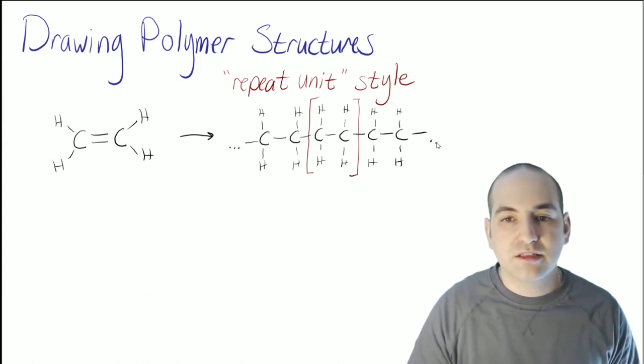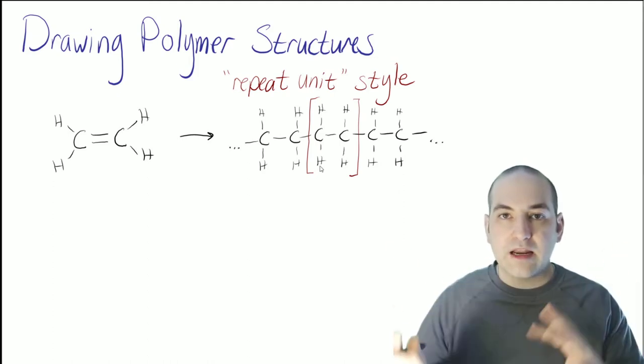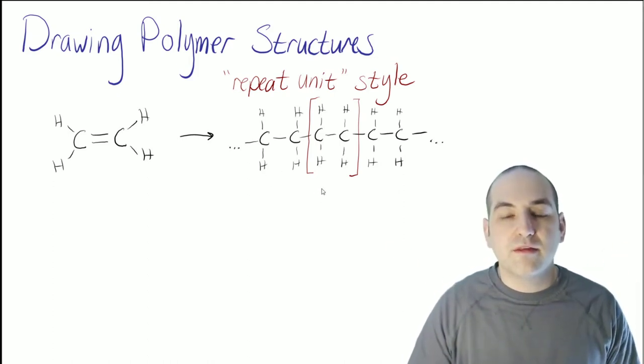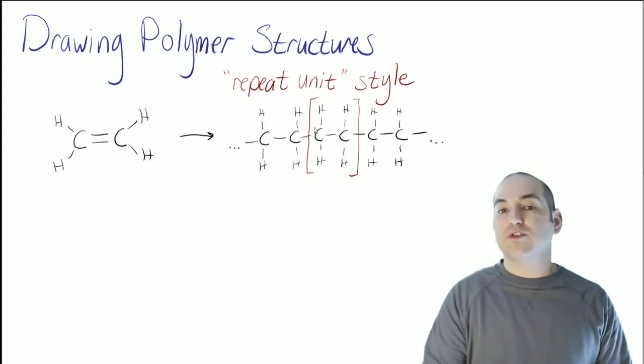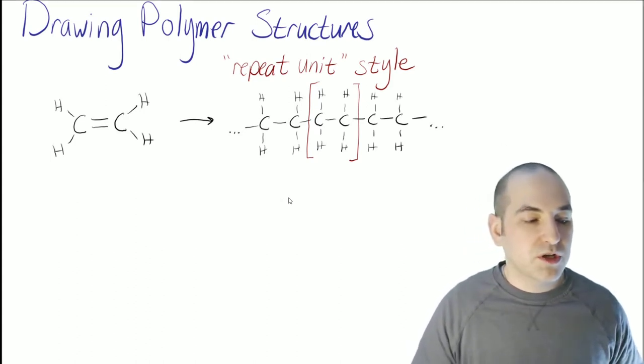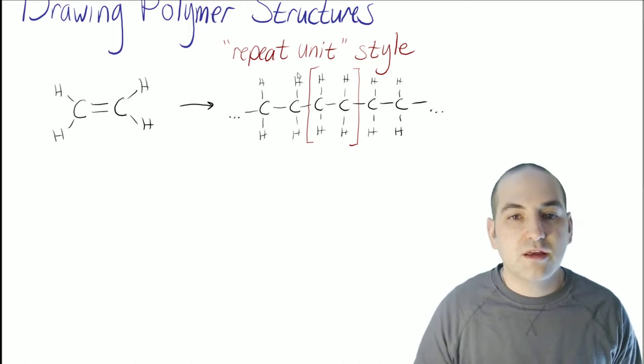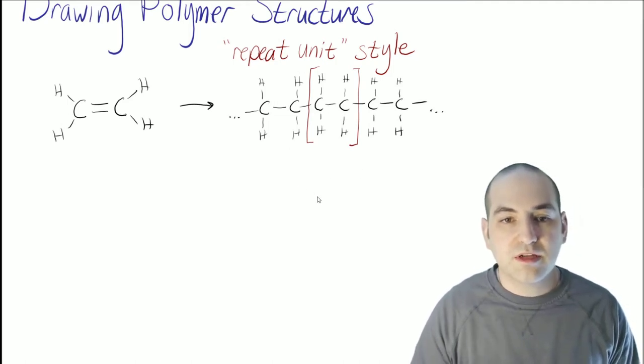I could do something like drawing little dots. So we do that sometimes to just show that it's going on and on and on. And then the other thing we could do is we could condense this a little bit so we don't draw all those hydrogens all the time. So I'm going to show you a couple different ways that we use to express a structure like this in what we call repeat unit style.